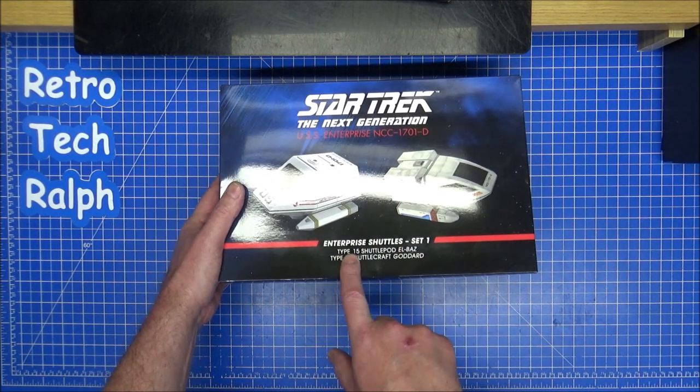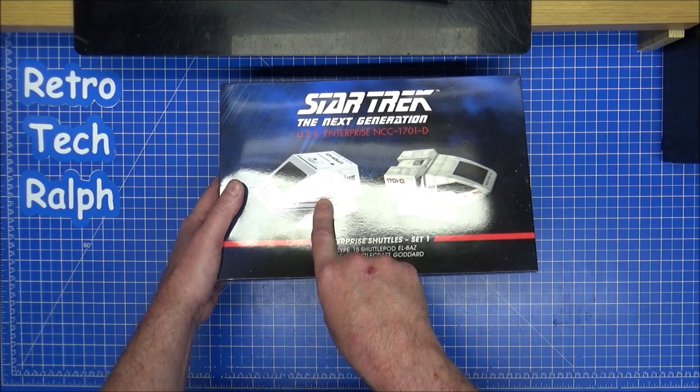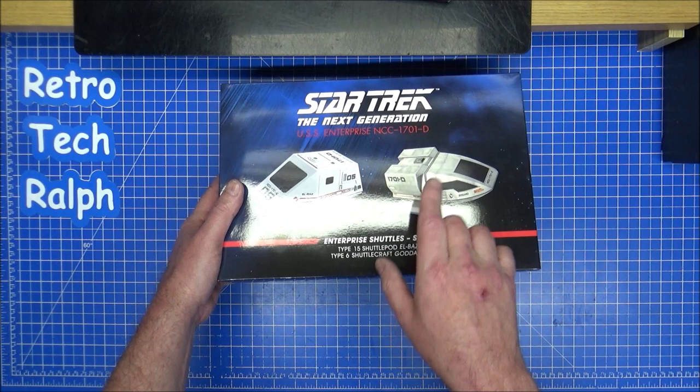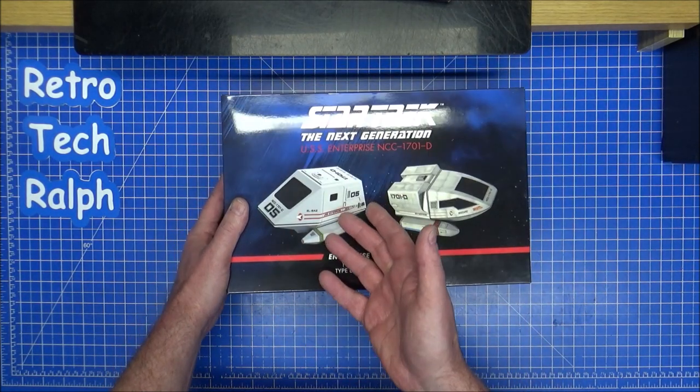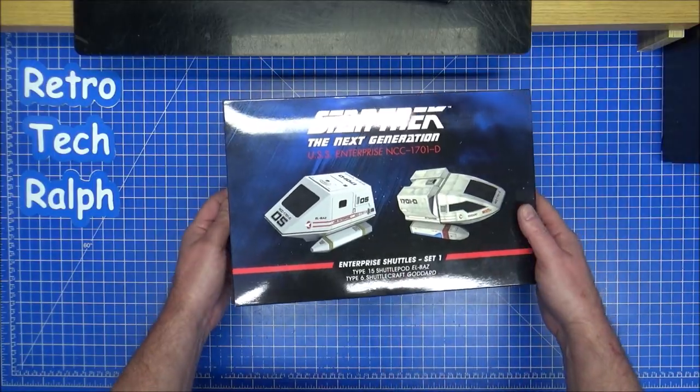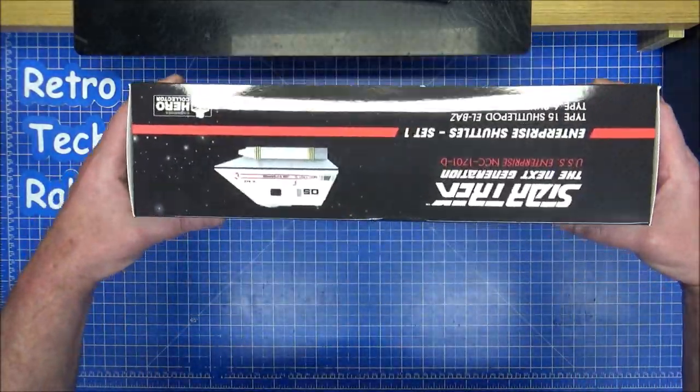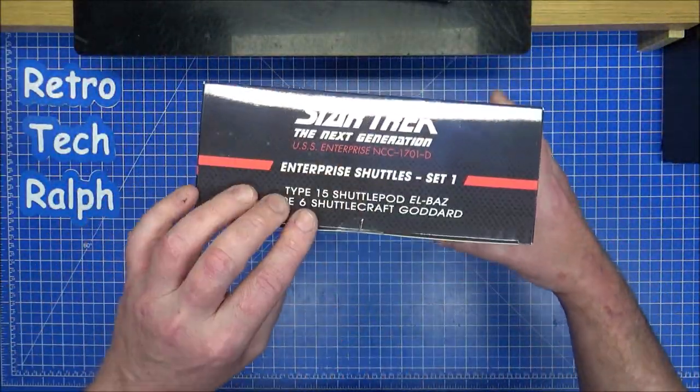The actual Type 15, the Shuttle Pod, was the Aldrin. I'm trying to look at my own video, but I've got the television the wrong resolution. But it was Shuttle Pod 2. Whereas this is Shuttle Pod 5, the Elbaz, which is part of the episode with Picard. It's nice little packaging, nice little artwork and stuff.